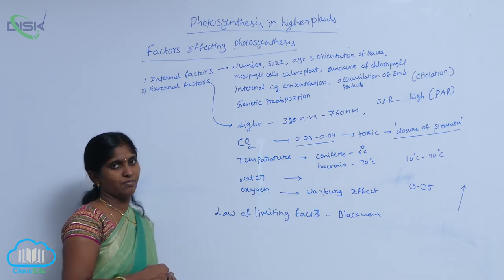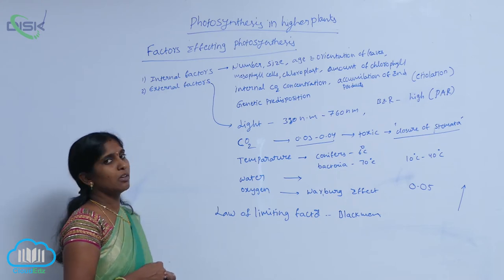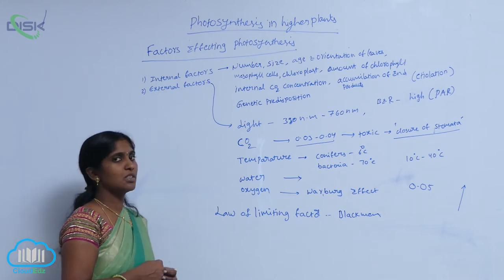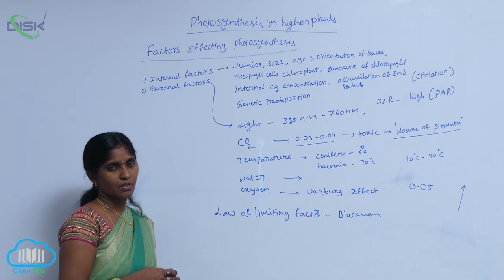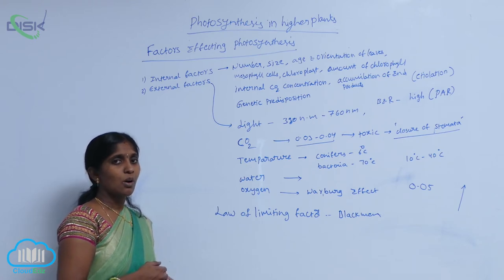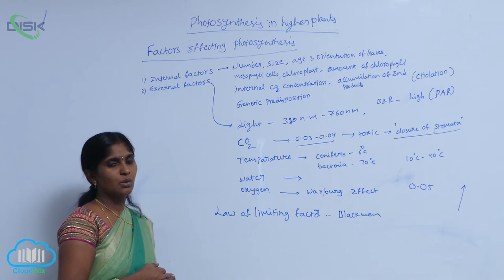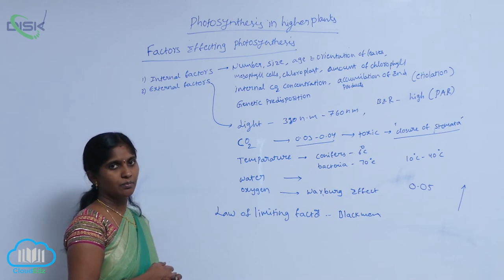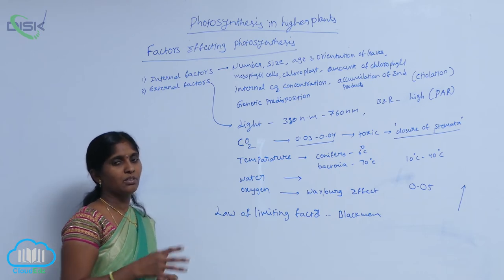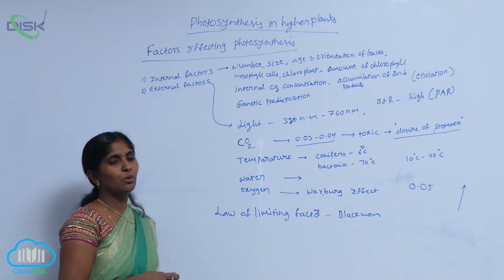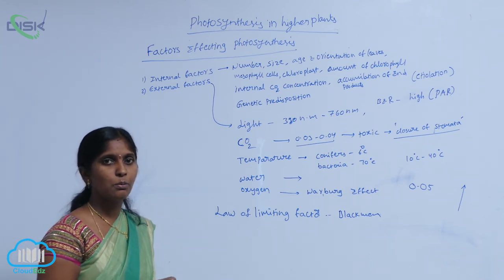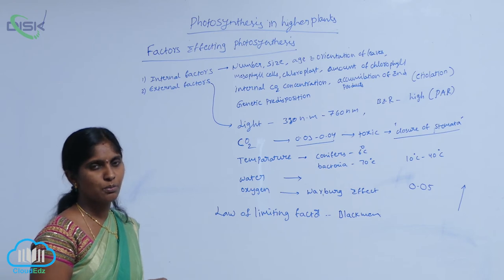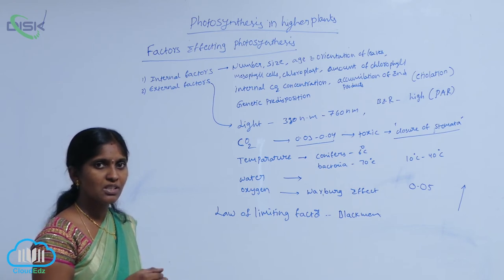Next is oxygen. Generally, oxygen is not a factor involved in photosynthesis — it is a product, one of the end products of photosynthesis. When the concentration of oxygen is more in the photosynthetic atmosphere, the plant can go into photorespiration. In photorespiration, there is no oxygen production, no ATP production, and no starch production, but carbon dioxide concentration gradually increases.